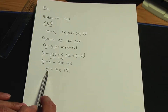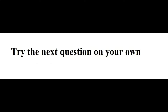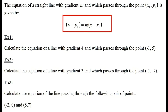Example number 2: calculate the equation of a straight line with gradient 3 which passes through the point (−1, −7). The gradient means m = 3, and the point the line passes through we regard as x1 = −1, y1 = −7 in the formula.